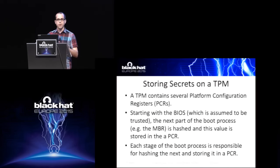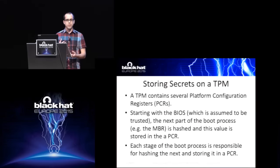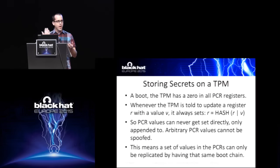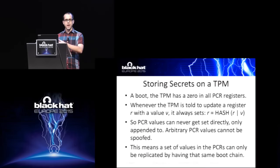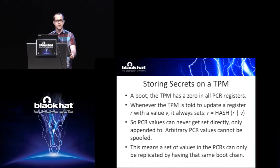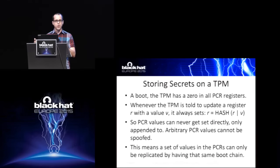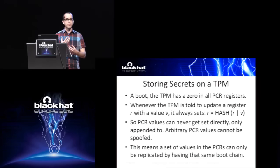Each stage of the boot process is responsible for making a hash of the next stage — whether that's the master boot record or the boot loader — and putting that value into a PCR. When a machine is first booted up, it initially has zero in all of these registers. Whenever an API call is sent to the TPM to update the value, it never sets the values directly. It always takes the old value, concatenates it with the new one, hashes that, and puts that result into the PCR. This is critical to how the TPM stores secrets safely, because you can't set arbitrary values to the PCR even if you have kernel-level access. Only the original boot process can reproduce those same values in the PCRs.